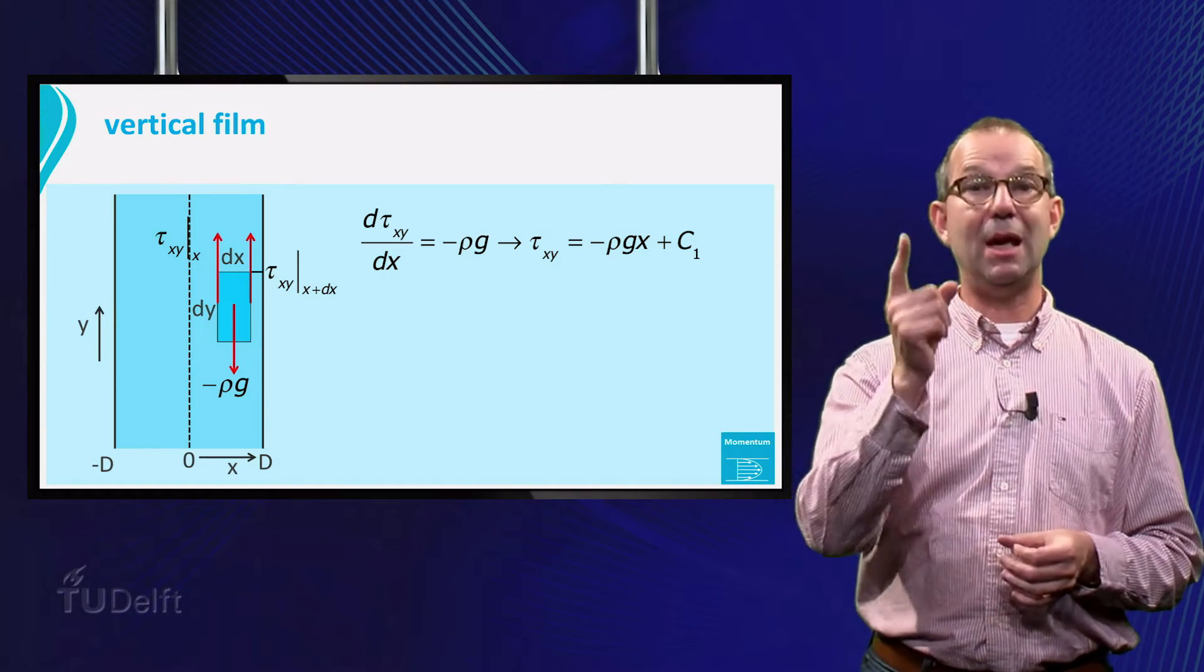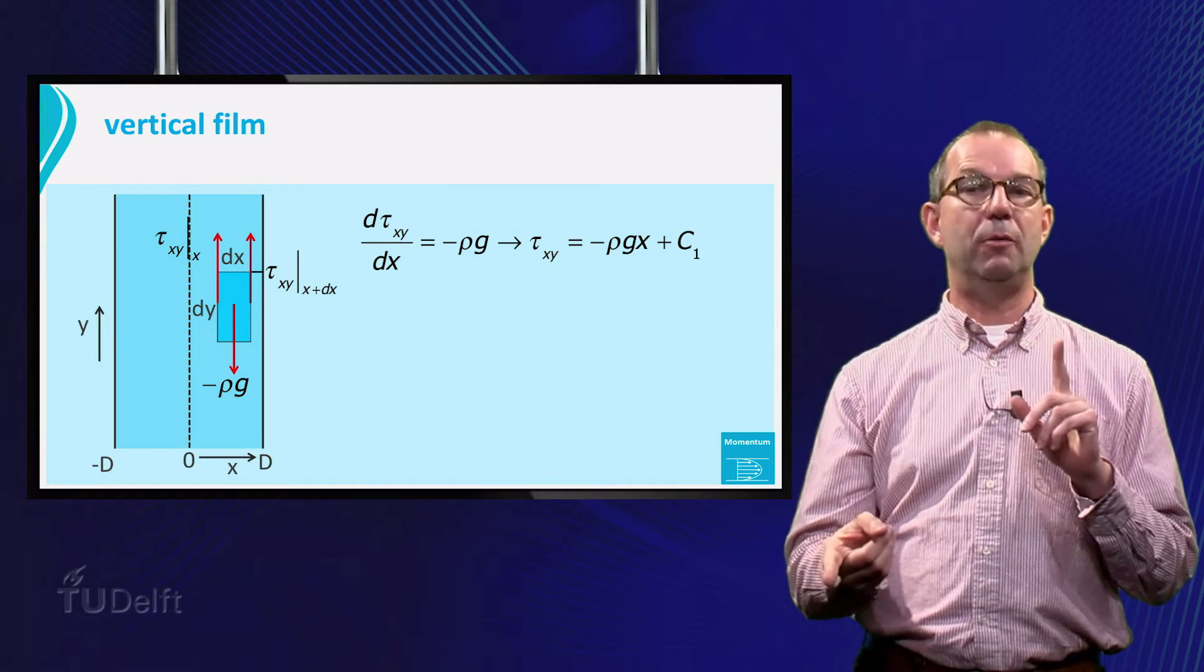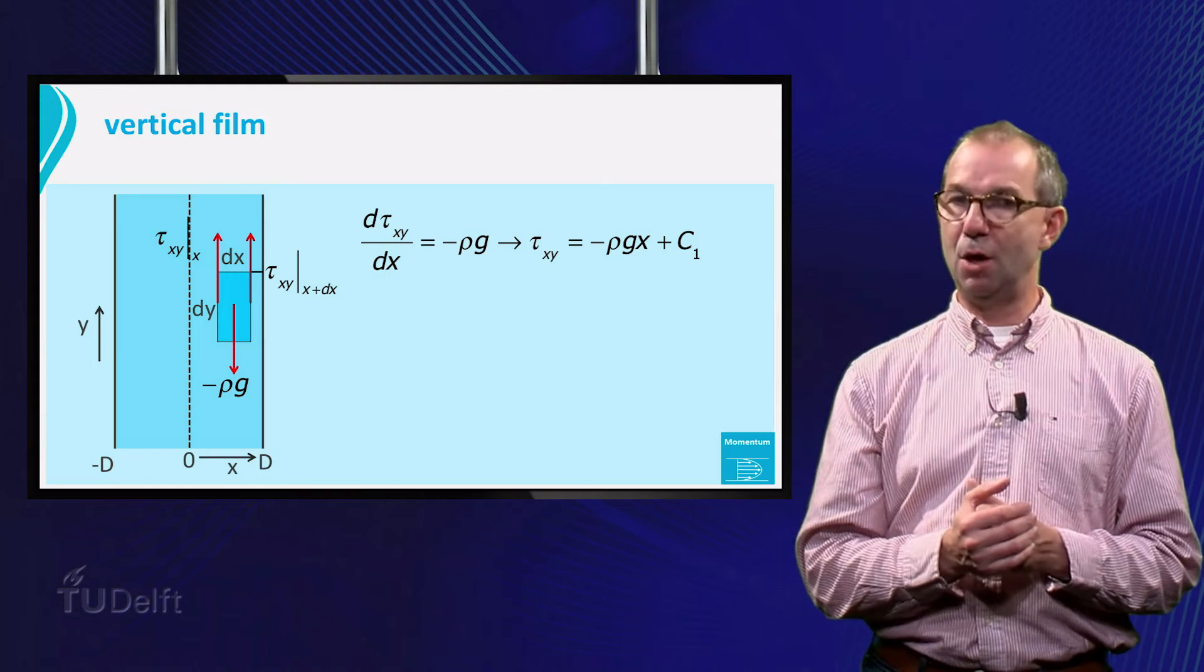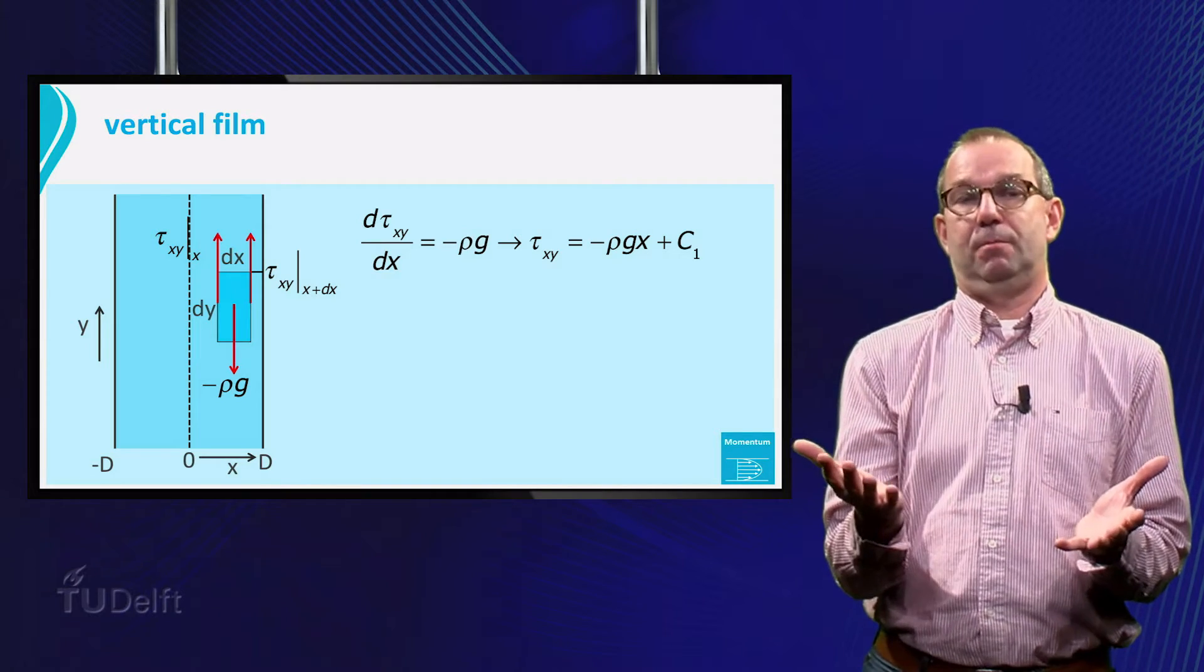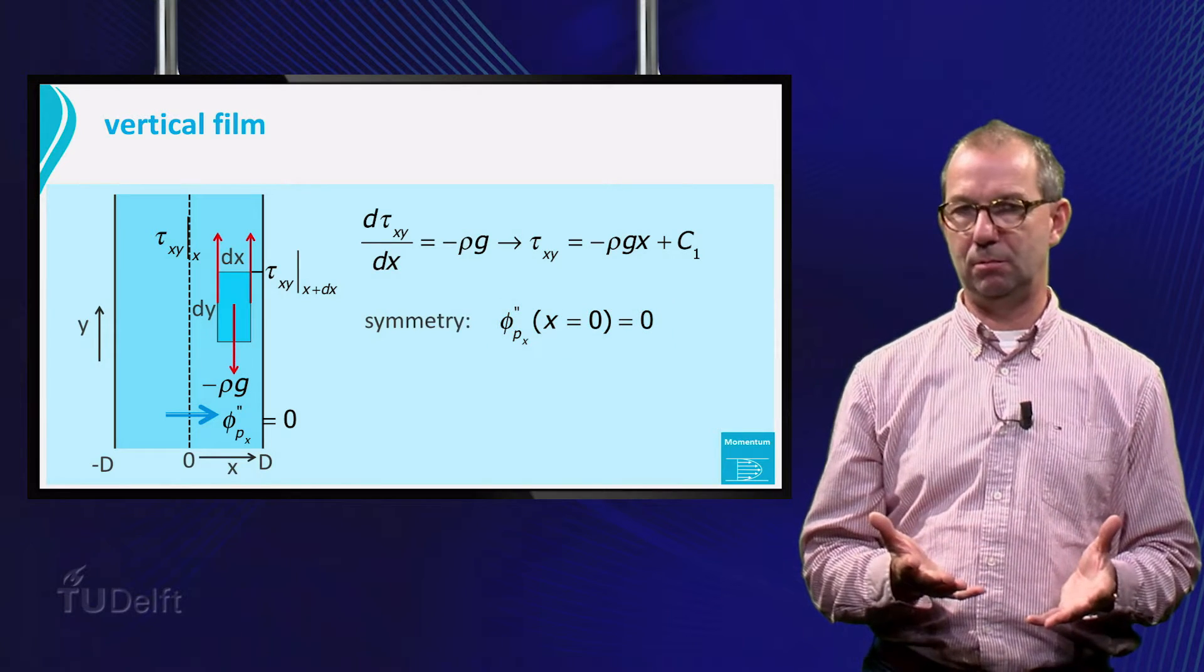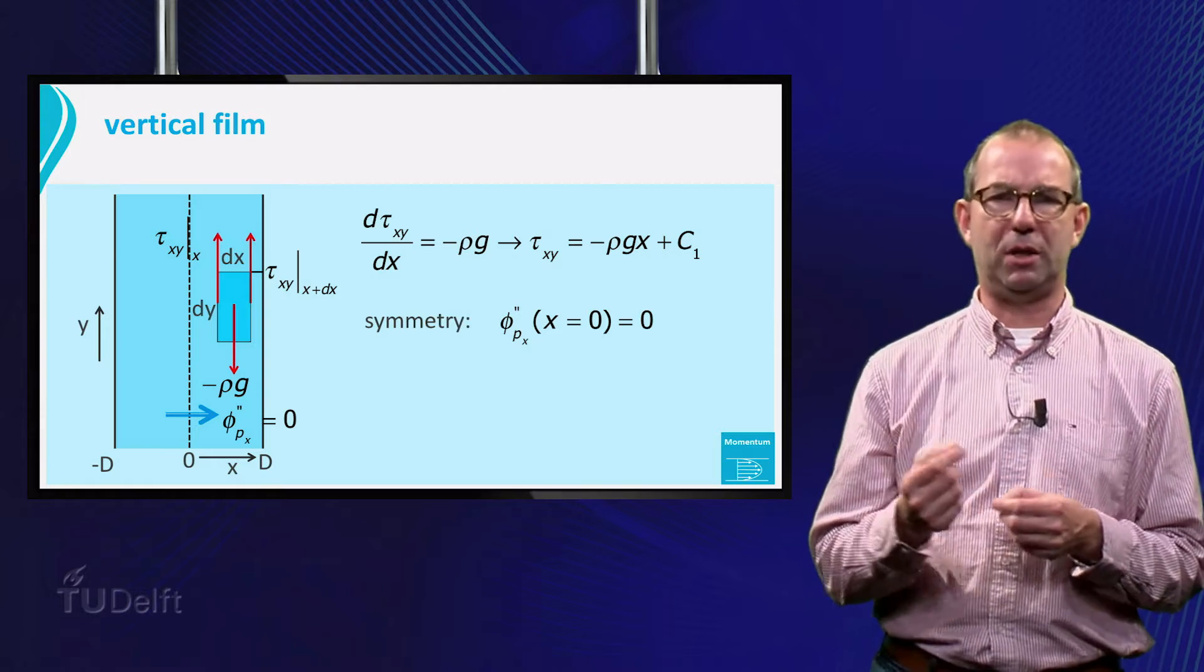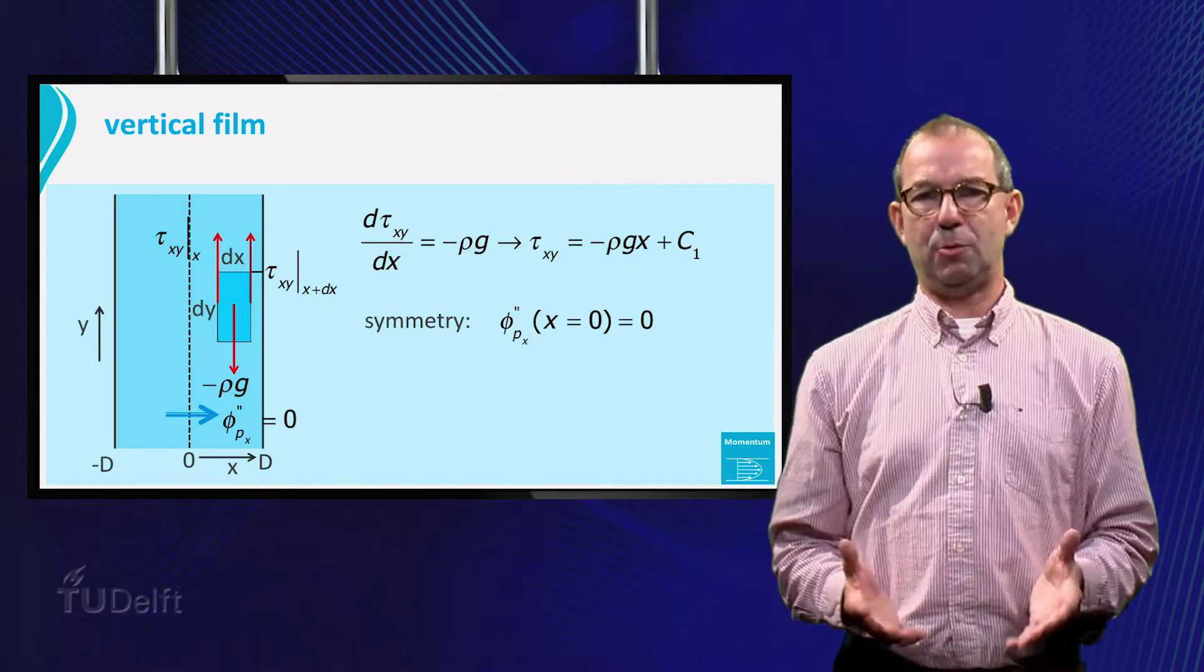In this case, the integration constant C1 can be found without having to solve the velocity profile. The argument is as follows. We have a symmetrical case. The left and the right side from the central dashed line are each other's mirror. That means that no momentum can flow from left to right or right to left, as that will break the symmetry. In formula, phi sub px at x equals zero must be zero. But remember, phi sub px represents the same as tau xy. The one sees the action of viscosity as molecular momentum diffusion, the other as a friction force. Thus, we see that the integration constant is zero.